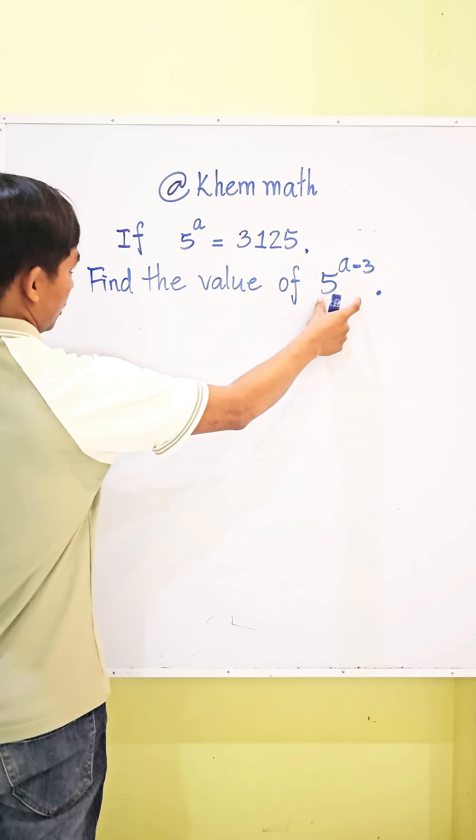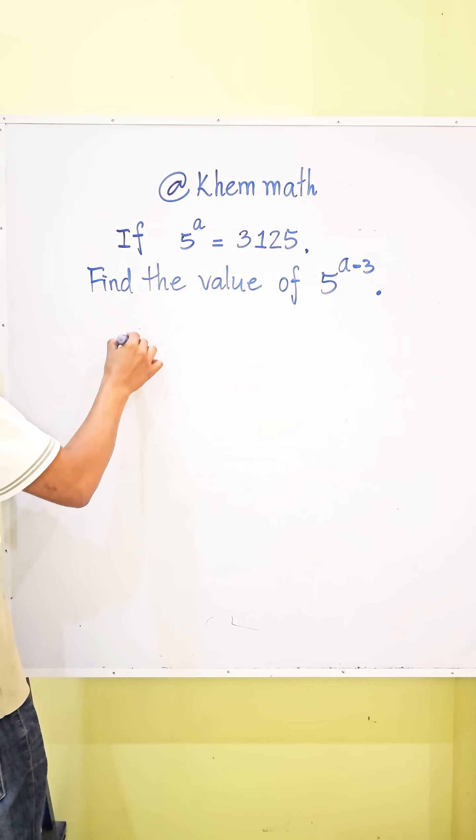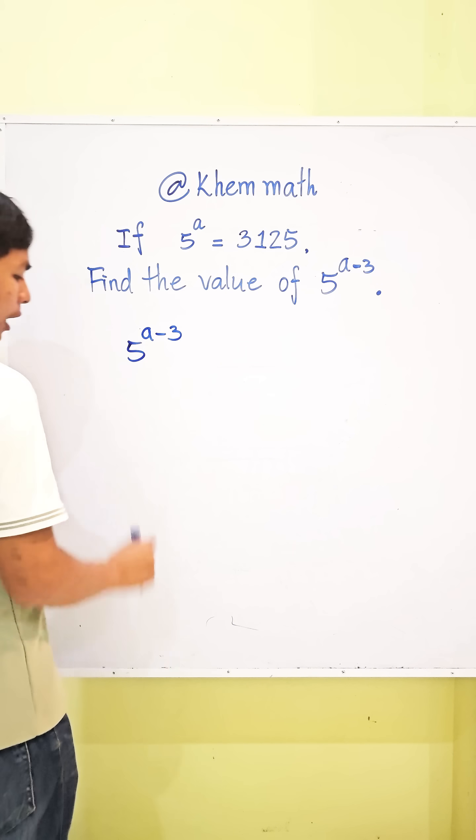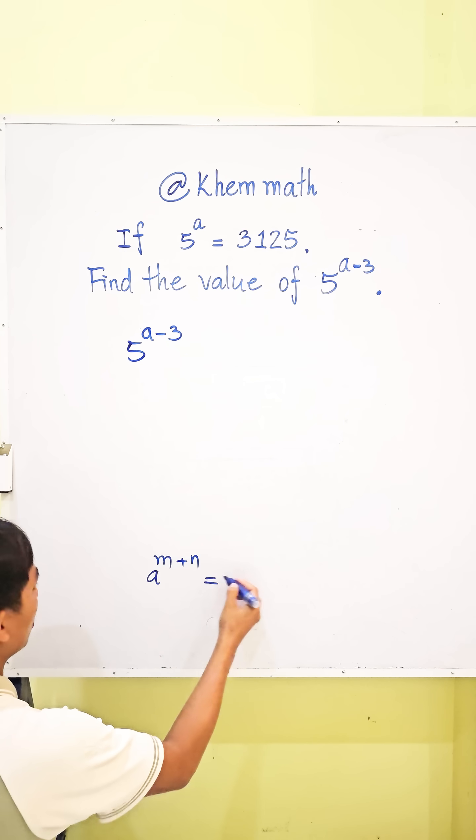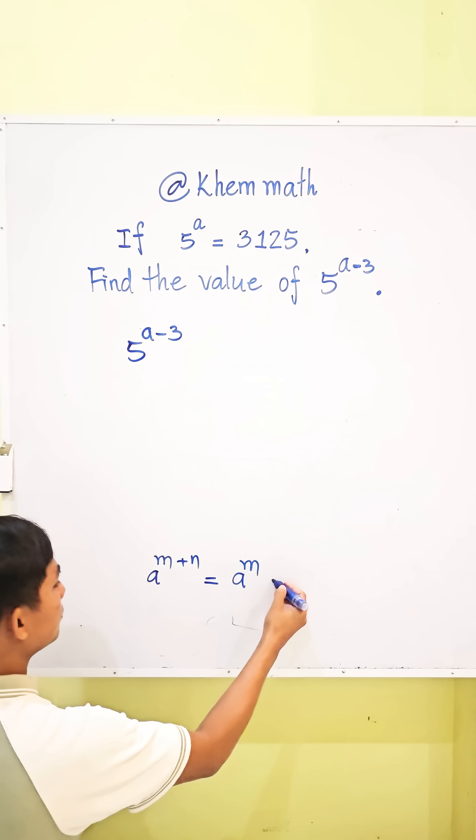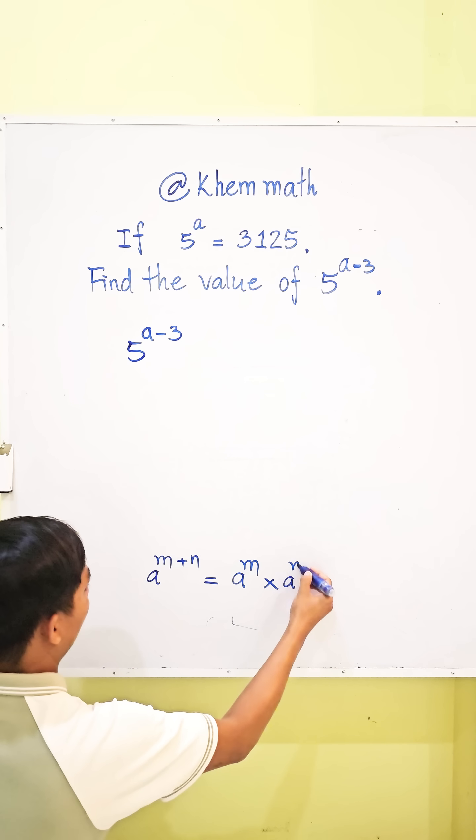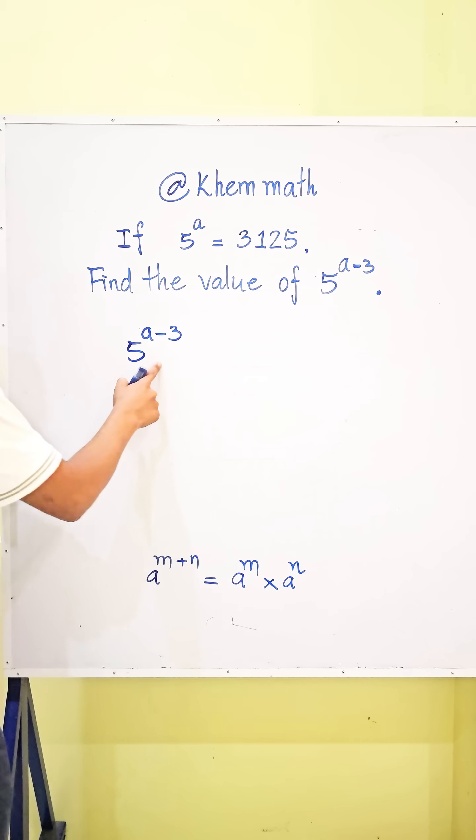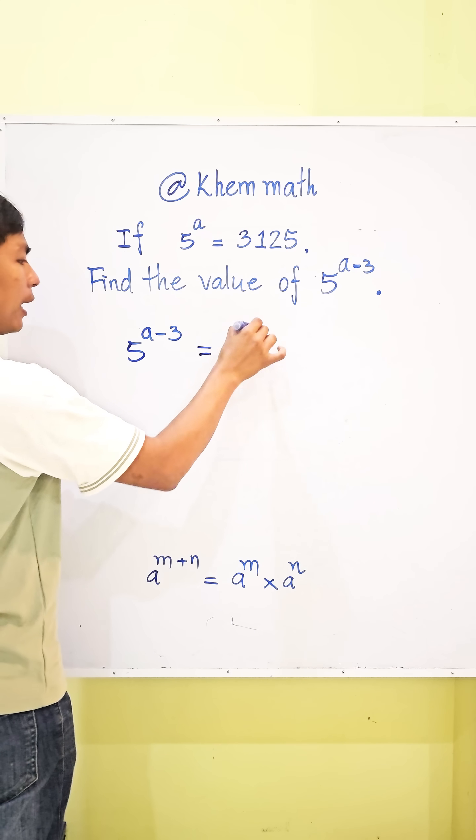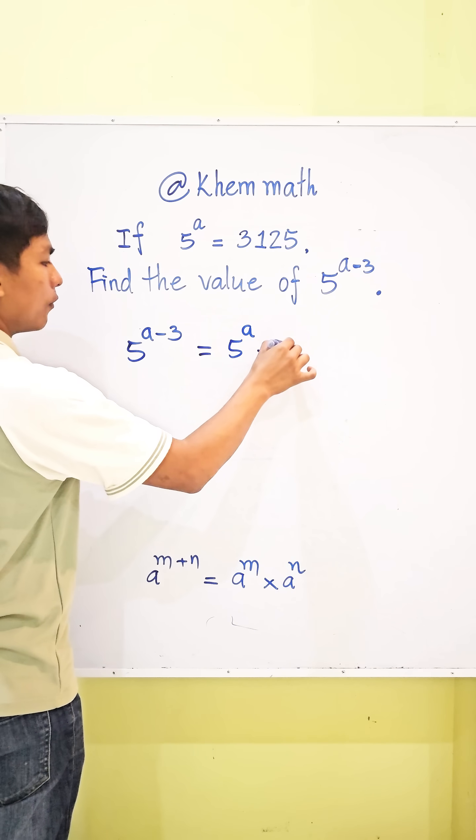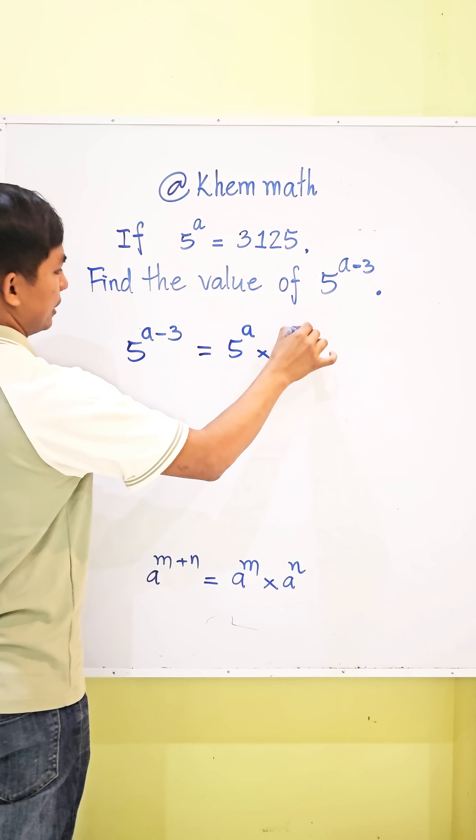Look, here is 5 power A minus 3. Here, I use the formula A power M plus N is equal A power M times A power N. So, here is equal 5 power A times 5 power negative 3.